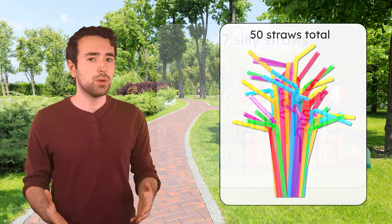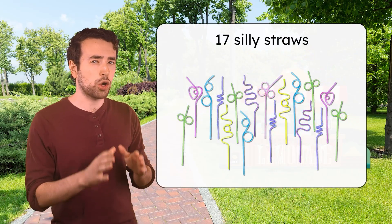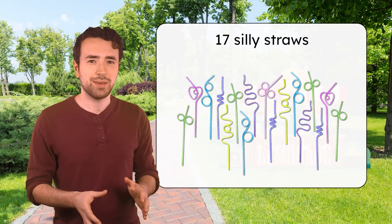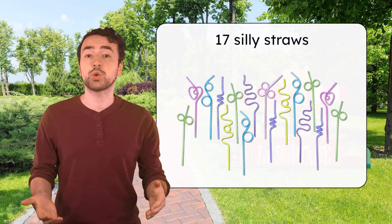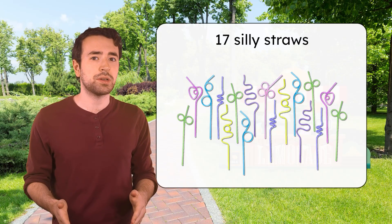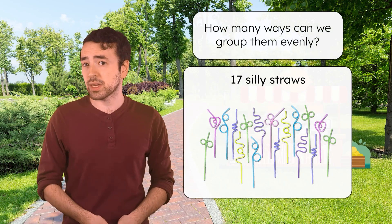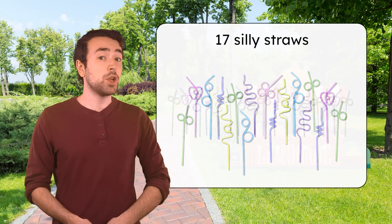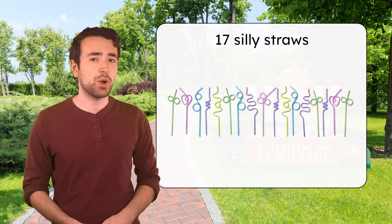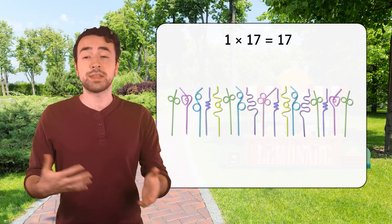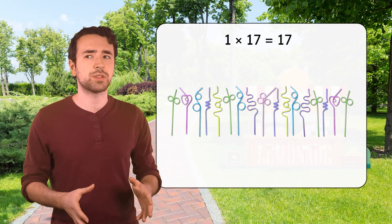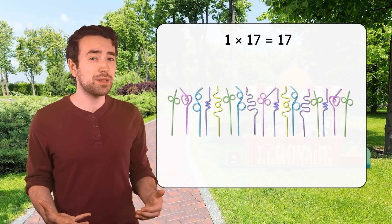the straws. Ren and Mia bought 50 in total, but 17 of them are curly silly straws. They want to figure out all the ways they can sort 17 silly straws into equal groups. How many ways can we group them evenly? I know one group of 17 straws will work, since one and the number itself are always factors, but are there any other ways to arrange them?